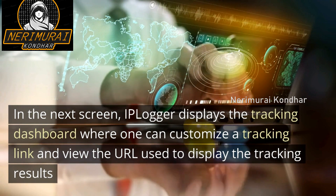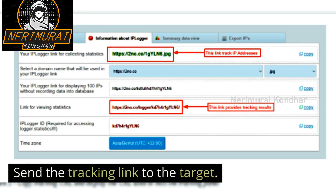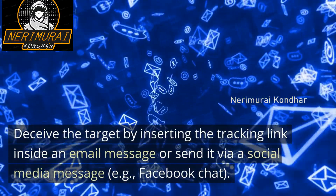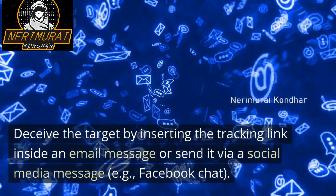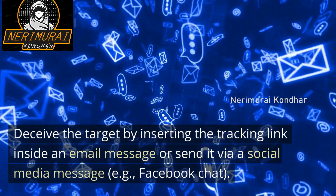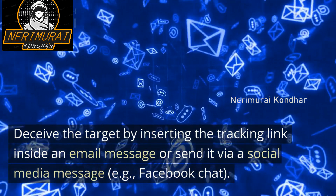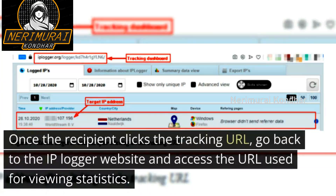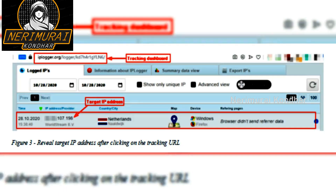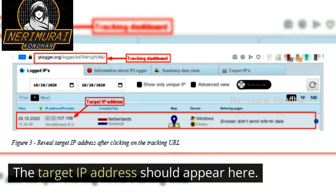Send the tracking link to the target — deceive the target by inserting the tracking link inside an email message, or send it via a social media message such as Facebook chat. Once the recipient clicks the tracking URL, go back to the IP Logger website and access the URL used for viewing statistics. The target's IP address should appear there.